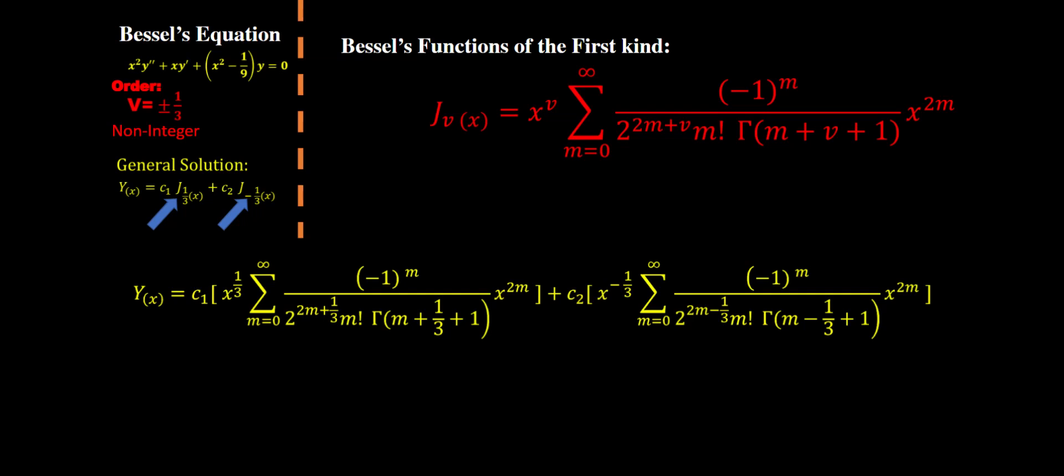Our general solution equals c1 and the c2 stay unchanged, they are just two constants, but instead of the two j functions we're gonna plug this giant formula in. For the first one instead of the v we plugged in one third, and in the second one instead of the v we plugged in negative one third.